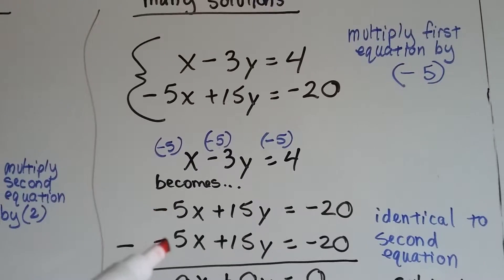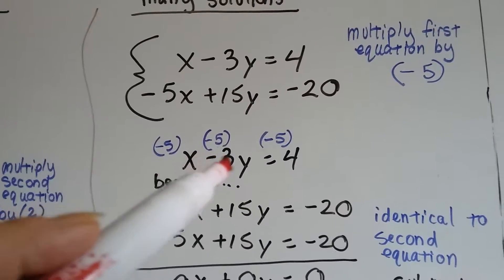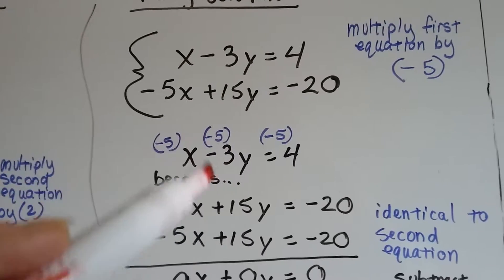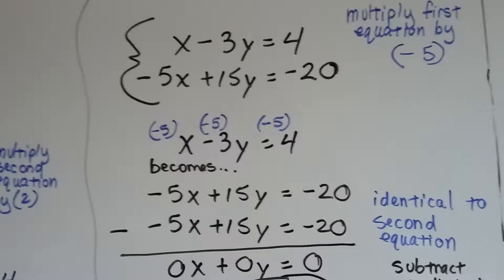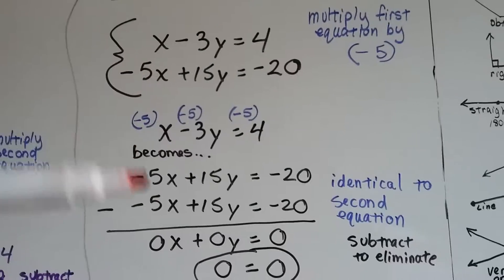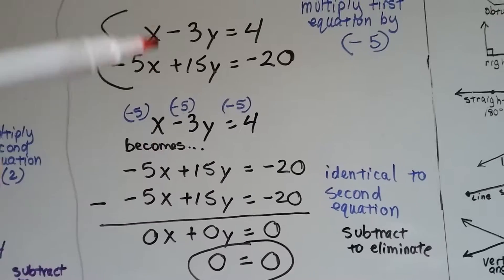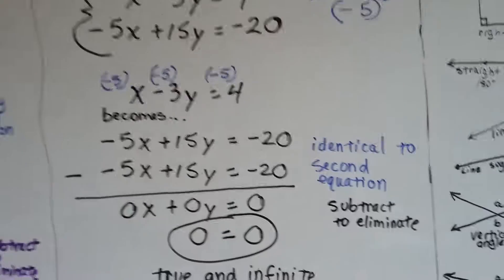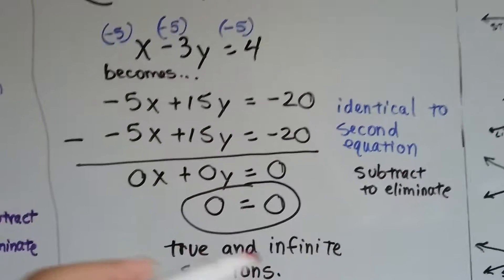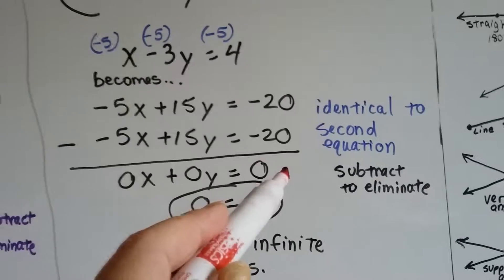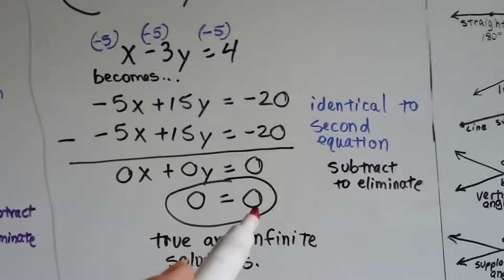We move it down to do it in clear, open space. x times -5 is -5x, -3y times -5 makes +15y, and 4 times -5 is -20. Look, it's identical to the other equation. When we subtract them we get 0x + 0y = 0.